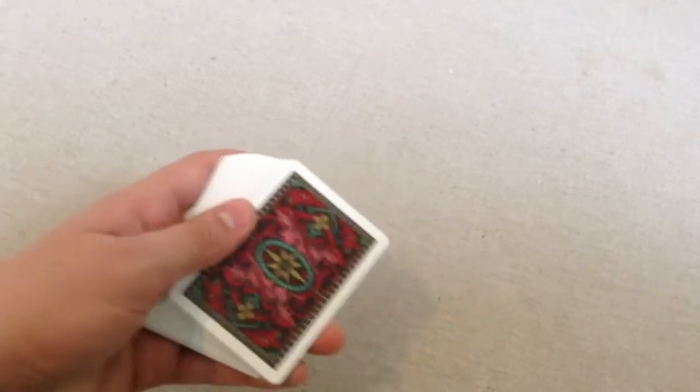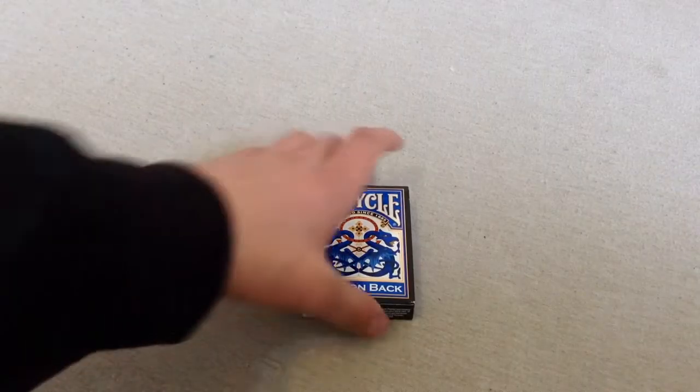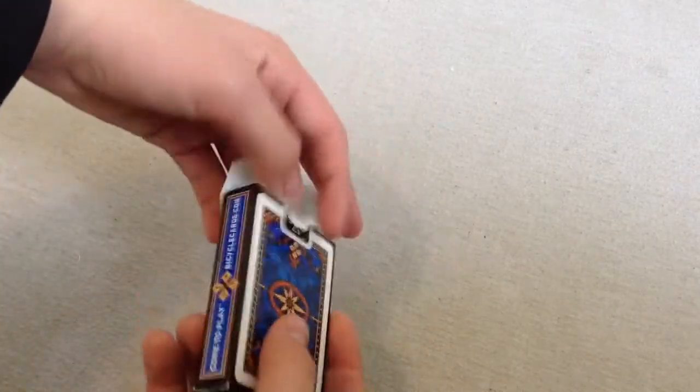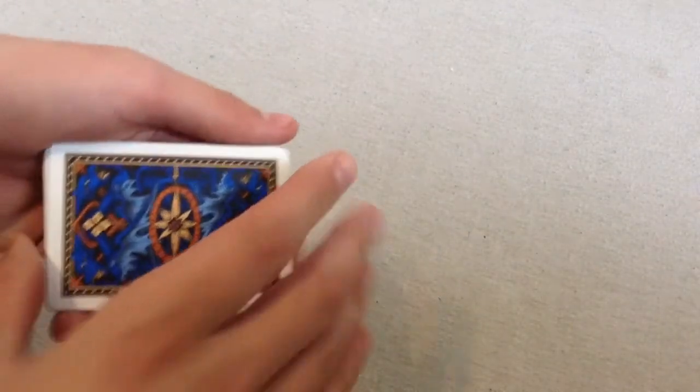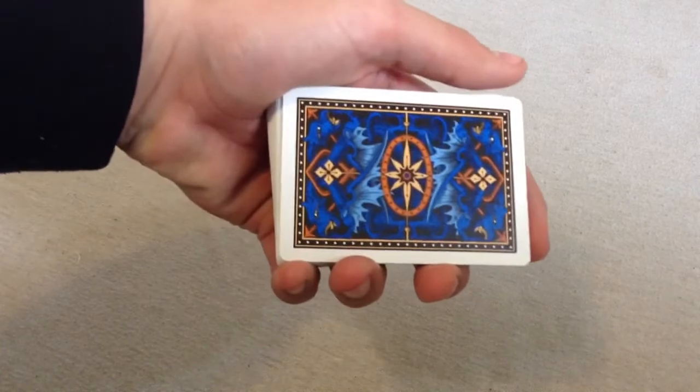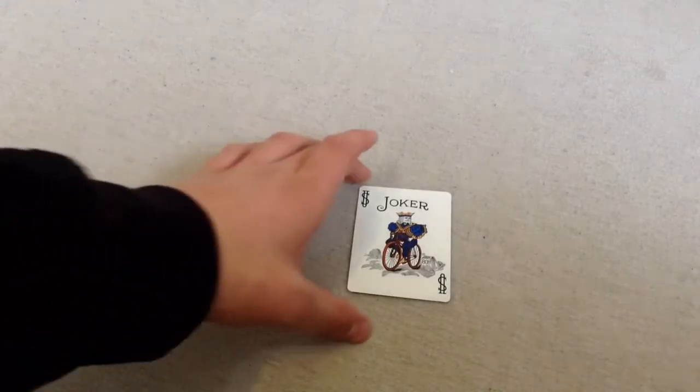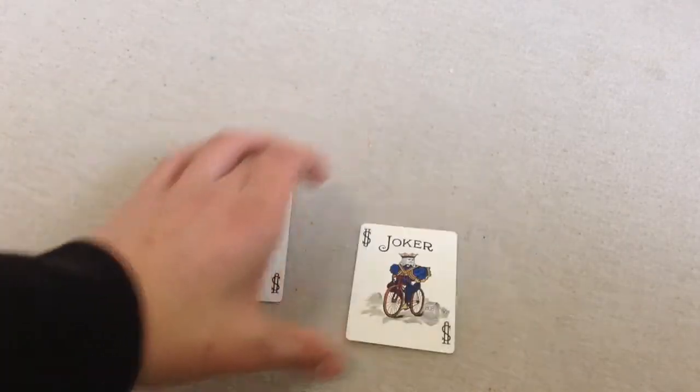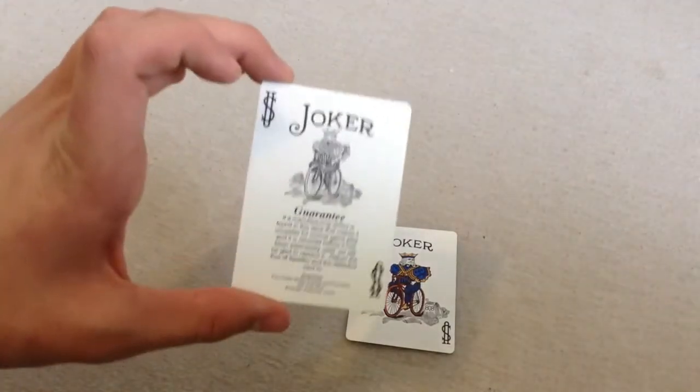We'll move to the blue deck. Here is the blue deck. The back design. The jokers are the joker of the color of the deck and the Bicycle guaranteed joker.